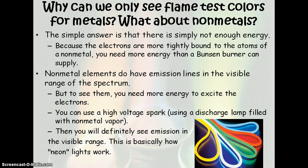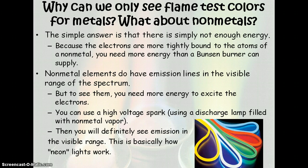Why can we only see flame test colors for metals and not nonmetals? There's simply not enough energy in the Bunsen burner — electrons in nonmetals tend to be bound more tightly, so you need more energy than a Bunsen burner can provide to get those electrons to jump up to another energy level. However, these transitions do happen in nonmetals. A common way to do this is to put a nonmetal gas into a tube and use a high-voltage spark or electricity to excite these electrons. What you essentially see is neon lights — that's how neon lights work.